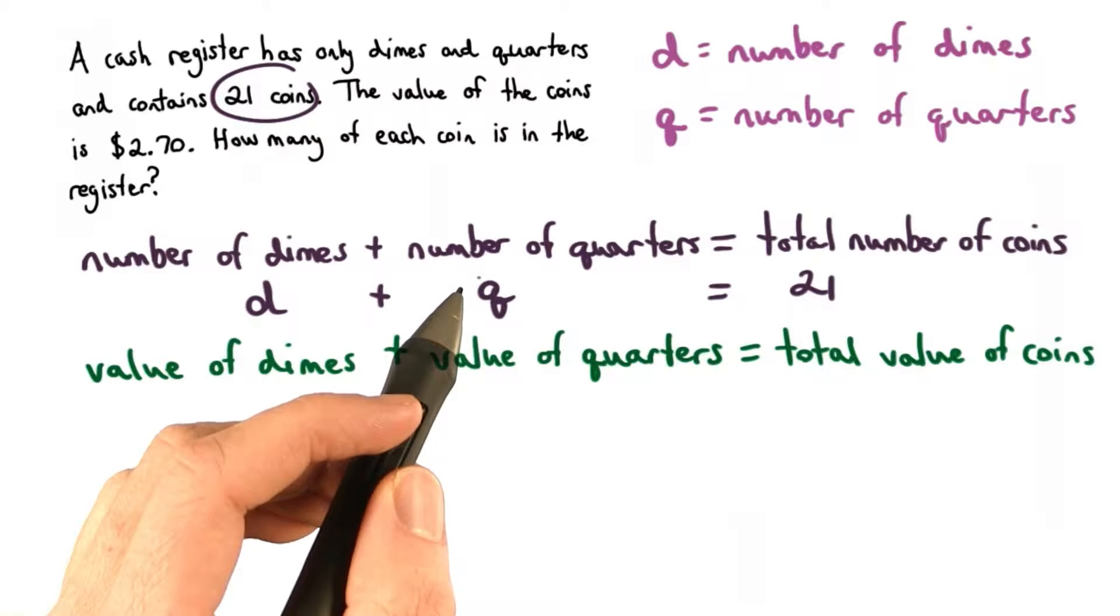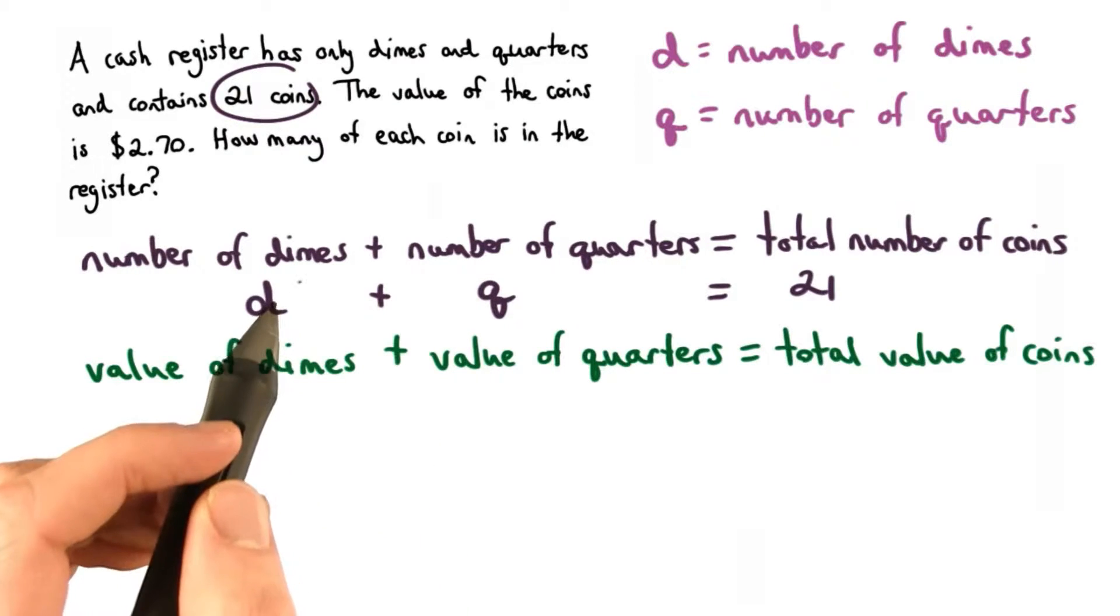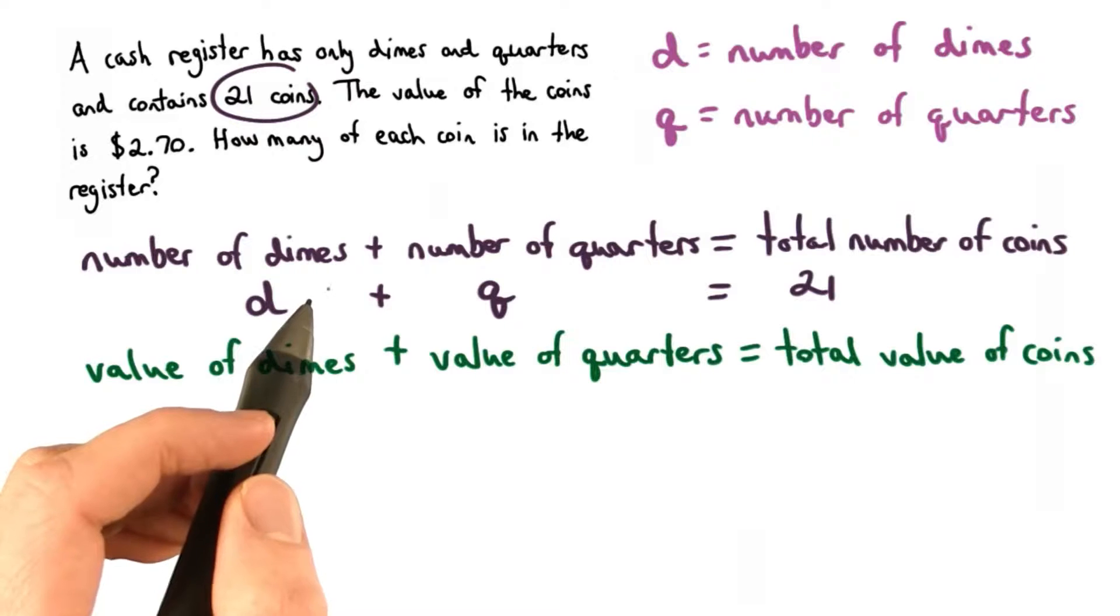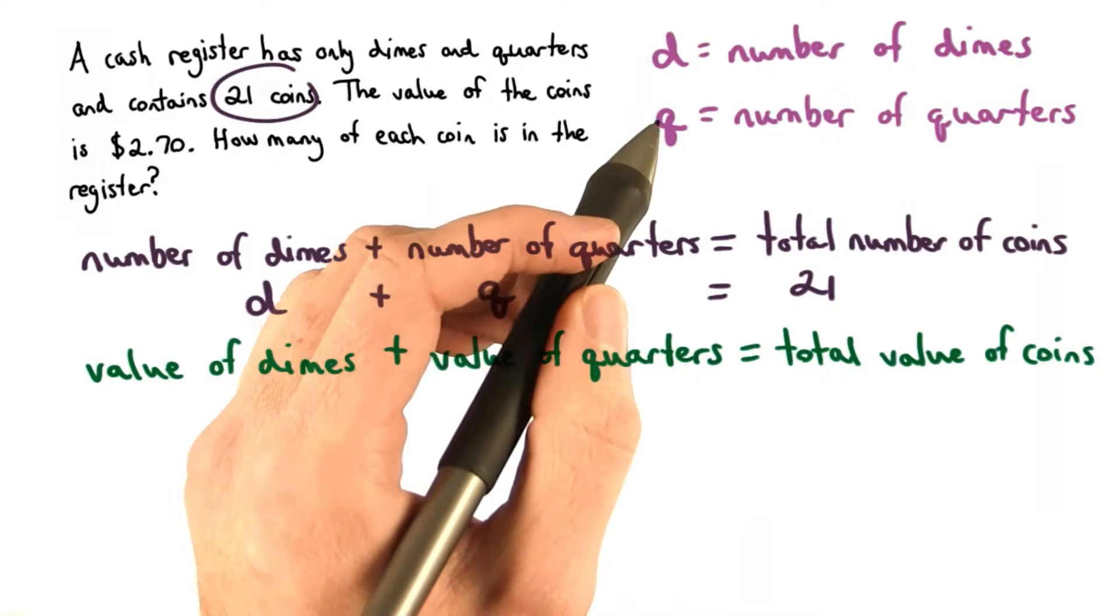Here, the variables are taking the place of the numbers. We don't know the number of dimes, so we use d. And we don't know the number of quarters, so we use q.